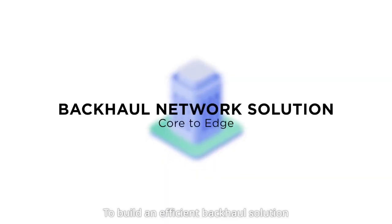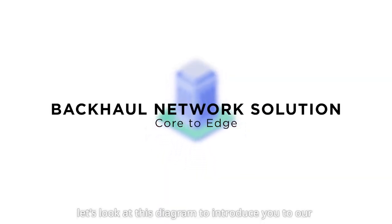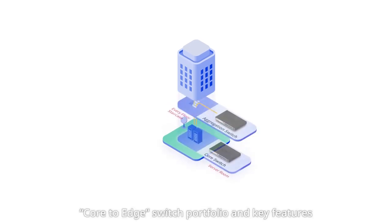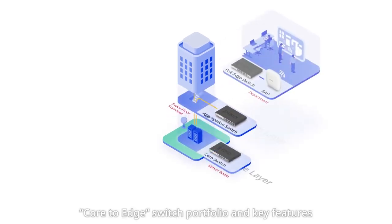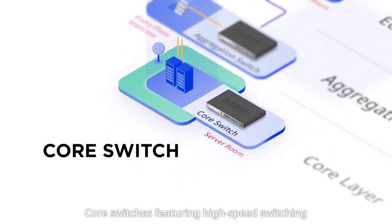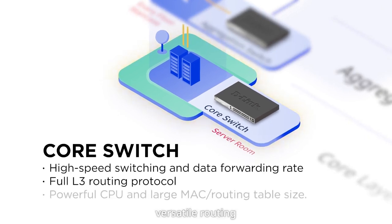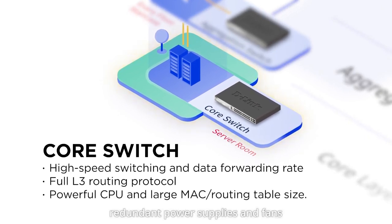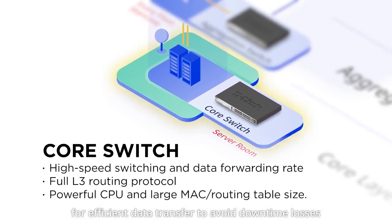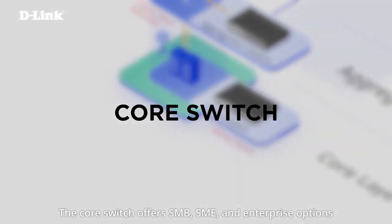To build an efficient backhaul solution, let's look at this diagram to introduce you to our core-to-edge switch portfolio and key features. Core Switches feature high-speed switching, versatile routing, redundant power supplies, and fans for efficient data transfer to avoid downtime losses.